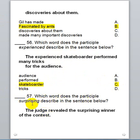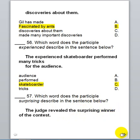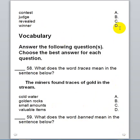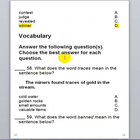Question 57: Which word does the participle 'surprising' describe in the sentence below? 'The judge revealed the surprising winner of the contest.' Here, 'surprising' describes 'winner,' so we're going to choose D. Excellent!